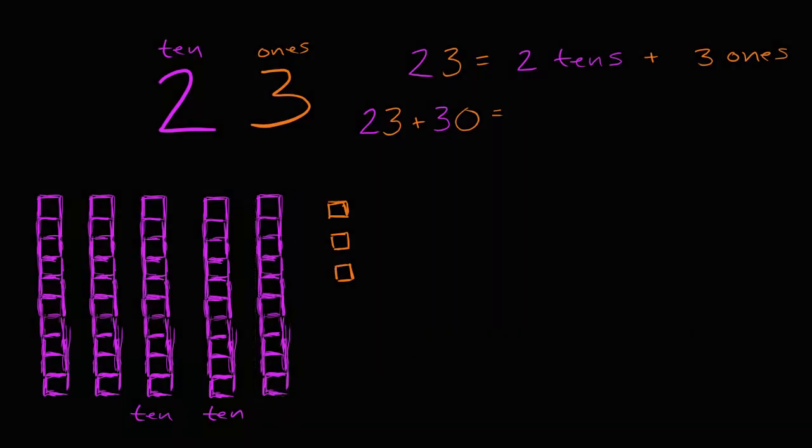So now, how many tens do I have? Well, I now have one, two, three, four, five tens. And notice, two tens plus three tens is equal to five tens. So now I have five tens.